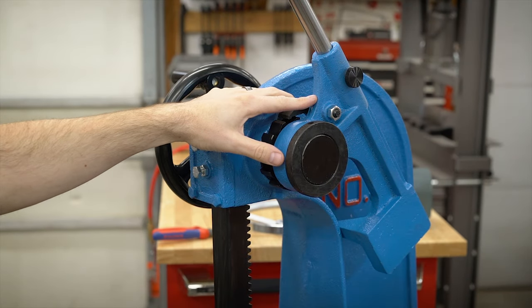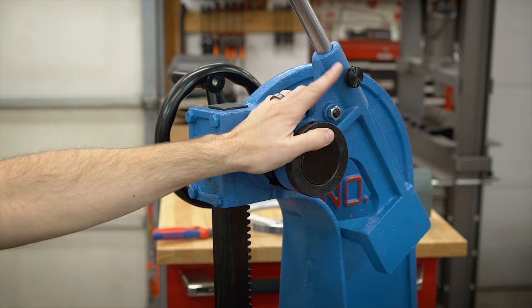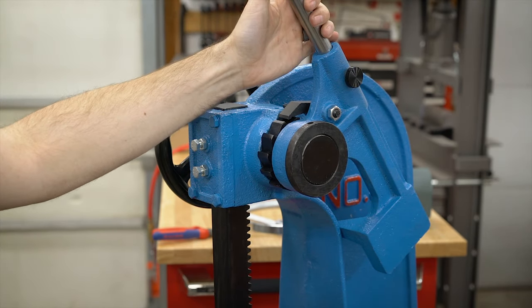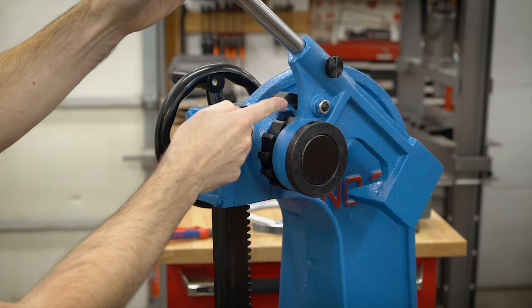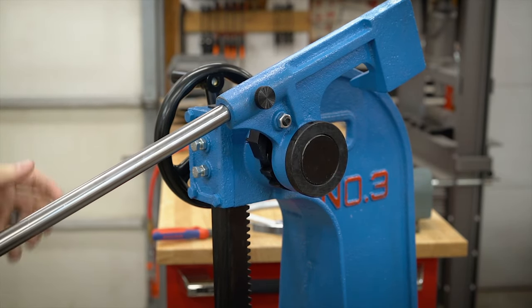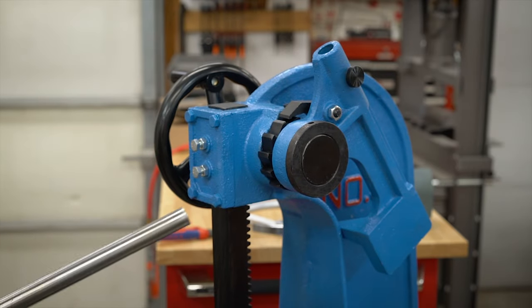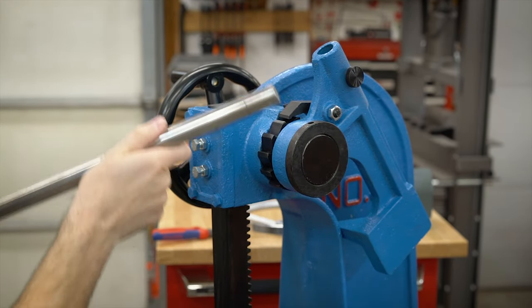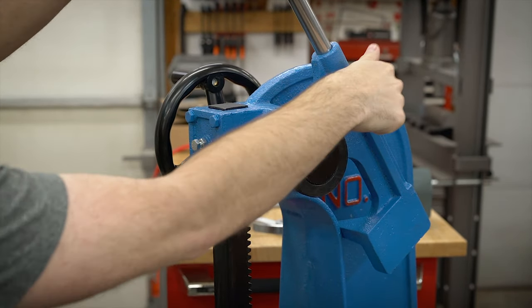Another minor modification that I did was add this little thumb screw right here. Originally, this handle just kind of sat in there. So when you got it down to about this level, it would just kind of fall out.